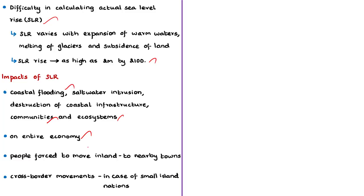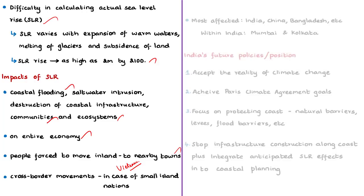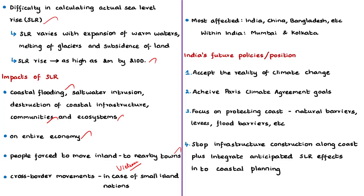People living along the coast will be forced to move inland to nearby towns and cities. In small island nations or low-lying delta regions like Vietnam, this is not possible due to geographical limitations, so people will be forced to move across borders, severely impacting the political stability of the region as they become environmental refugees. According to the author, the most affected would be people living in Asia — especially from countries like China, Bangladesh, and India — and in India the most affected cities would be Mumbai and Kolkata, where a major portion of both cities could submerge under the sea by 2050.